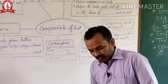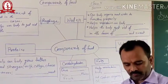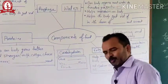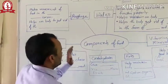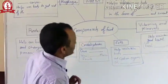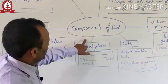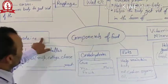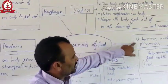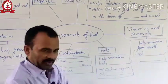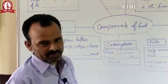Friends, today we will learn about the components of food. This is the most important chapter in our science for class 5. In this chart, you can see the components of food. What are the main components of food? The main components of food are carbohydrate, protein, roughage, water, vitamins and minerals, and fats. Each type of nutrient has its own function.